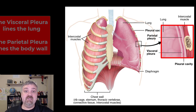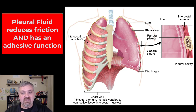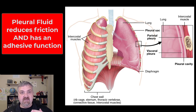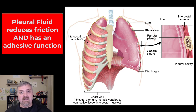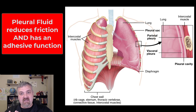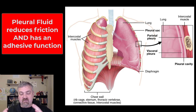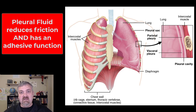But the serous fluid has one other really important job here. It actually maintains the tension between the visceral and parietal pleura so that when your ribs expand and your diaphragm drops, it will pull the lungs with it, making the lungs larger so that the pressure will drop and you can inhale. So really, not only is it a lubricant, but it's also an adhesive. It holds these two linings close enough together so the changes in the thoracic cavity caused by the diaphragm dropping and ribs expanding will bring the lungs with it as you inhale, and elastic recoil brings the lungs back to normal as you exhale.